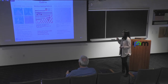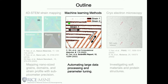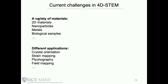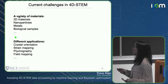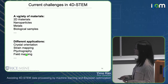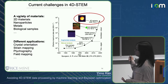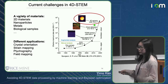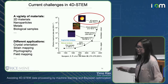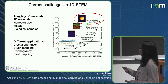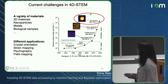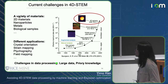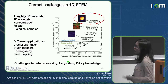The next topic is machine learning methods to help 4D-STEM analysis. 4D-STEM is becoming increasingly popular for studying 2D materials, nanoparticles, metals, biological samples, and polymers. It generates very large datasets — terabytes of data — and requires a lot of prior knowledge to analyze. The two main challenges are: 4D-STEM produces very large data, and you need extensive domain knowledge to design the mapping strategy.